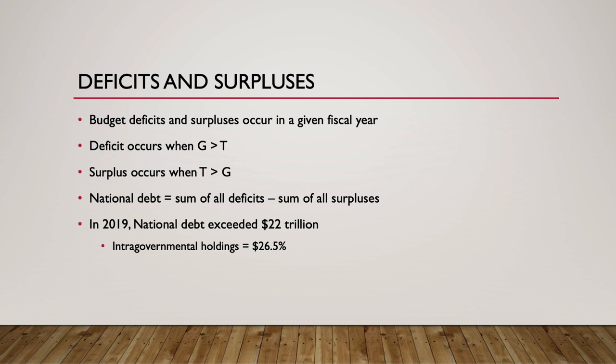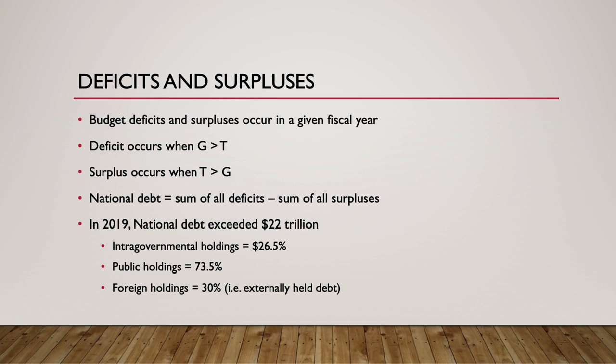The rest of the debt is held by the public. As of 2019, public debt held in the form of U.S. Treasury securities by individuals, companies, pension funds, along with foreign investors and foreign governments accounted for 73.5% of total U.S. national debt, with foreign entities and governments holding 30% of that total. Debt held domestically is referred to as internally held debt, and debt held by foreign entities is referred to as externally held debt.